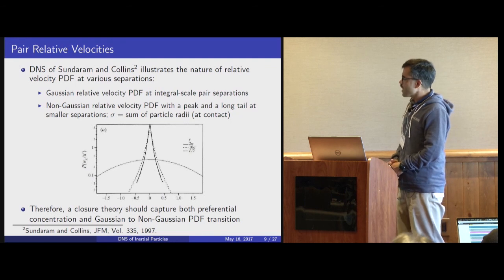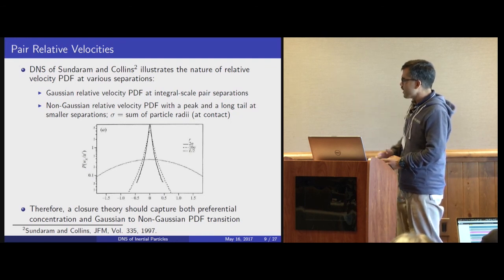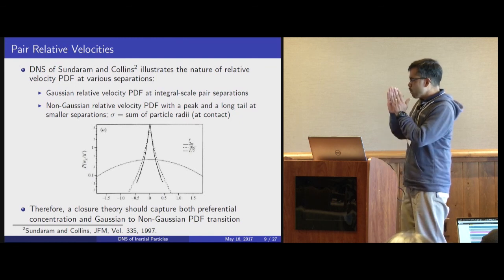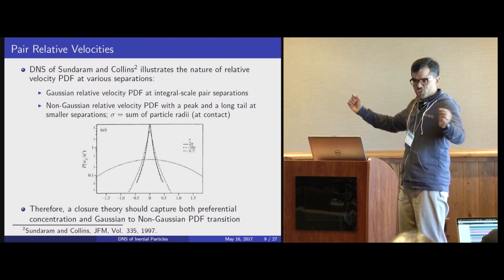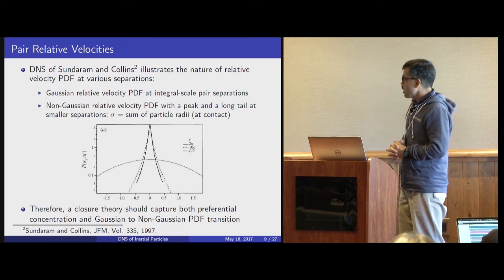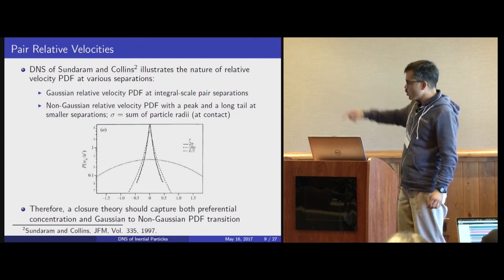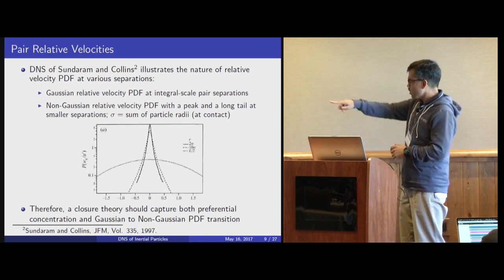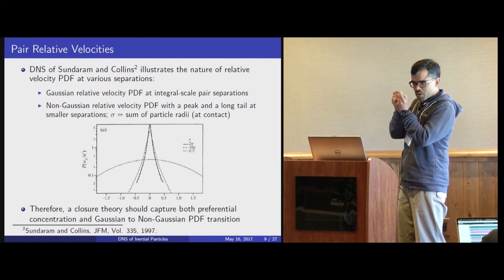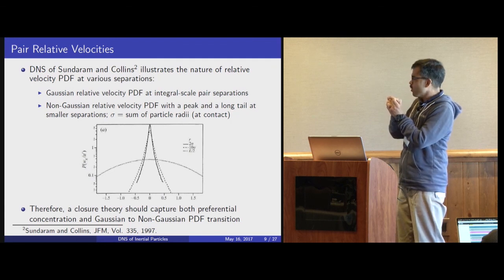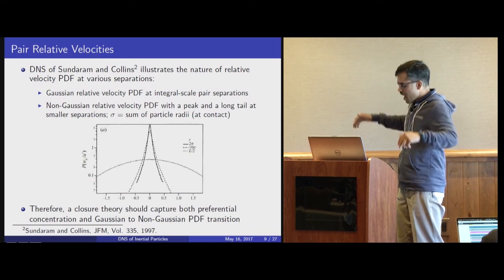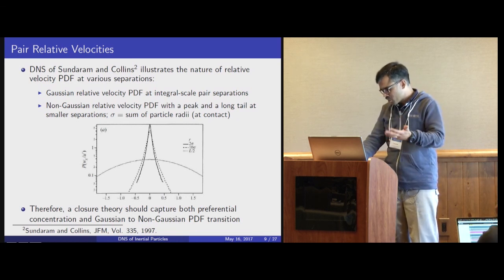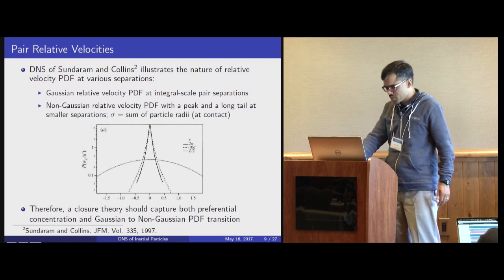The second statistic of interest is the PDF of pair relative velocities. This is a study by Sundaram and Collins — a DNS study showing that the PDF of relative velocity is a strong function of pair separation. When the pair separation is large, at L/2 — half of the integral length scale of turbulence — the PDF is Gaussian. Whereas when the pair separations are quite small, the PDF of relative velocities is strongly non-Gaussian with a high peak and long tails. Turbulence has a significant influence on both the spatial distribution of particles and the relative velocity distribution.